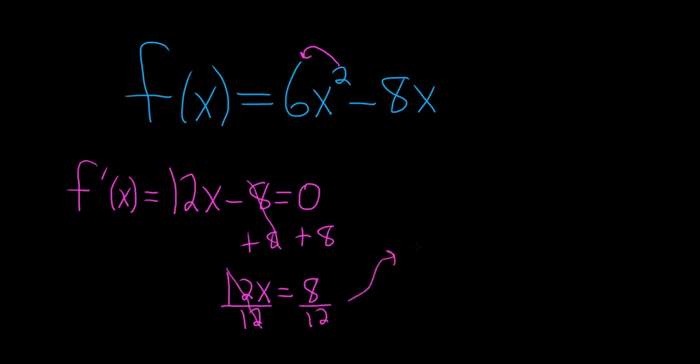That gives us x equals 8 over 12, which can be reduced to 2 over 3, right? 4 goes into 8 twice, goes into 12 three times. And that would be our critical number in this problem.